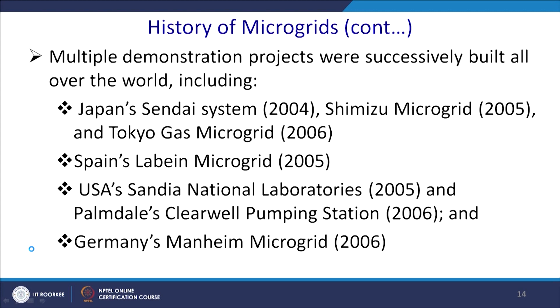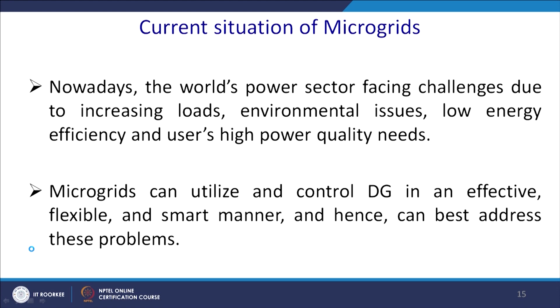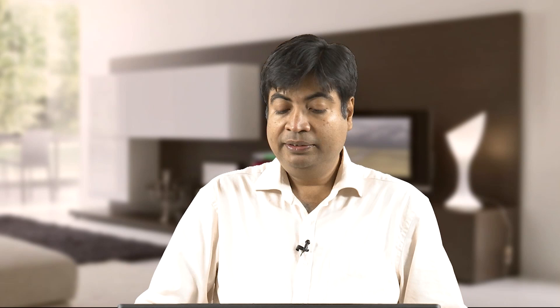What is the current situation of microgrids? Nowadays, the world's power sector faces challenges due to increasing load and environmental issues. We require reducing carbon footprint while maintaining or enhancing lifestyle — especially in countries like India where per-capita power consumption is still quite low. There are environmental issues, low energy efficiency, and power quality needs, all of which need to be addressed through microgrids. Microgrid can utilize and control distributed generation in an effective, flexible, and smart manner to best address these problems.